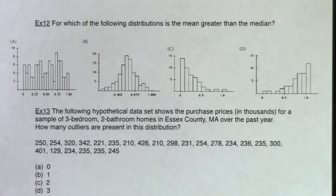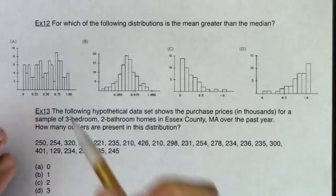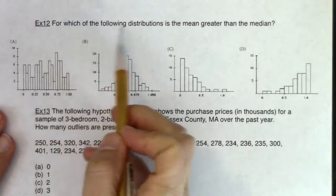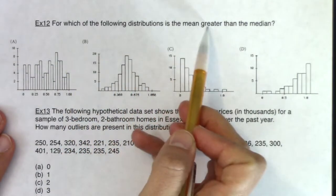All right, let's round this chapter out with some multiple choice questions. So example 12, for which of the following distributions is the mean greater than the median?